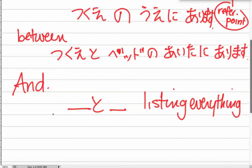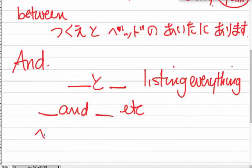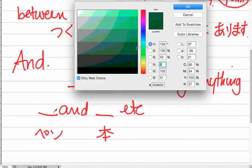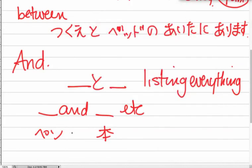But sometimes you just don't want to list everything. Sometimes you just want to say we did stuff like this and that, etc. And when we do that, we'll take our item, like our pen and our hon, our book, and instead of using to to join these, we will use the idea of ya and nado.